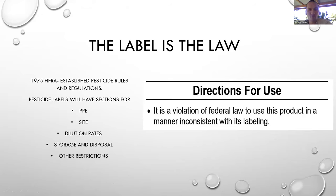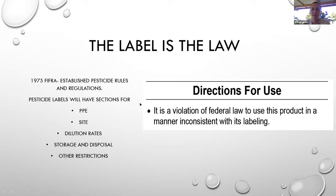Basically, when it comes to pesticides, the label is the law. In 1975, FIFRA — the Federal Insecticide Fungicide Rodenticide Act — was established, setting up specific rules for pesticide regulations. This gives us power to enforce these laws. Pesticides will always say on the label: it is a violation of federal law to use this product in a manner inconsistent with its labeling. That includes sections for PPE, sites, dilution rates, storage, disposal, and other restrictions.